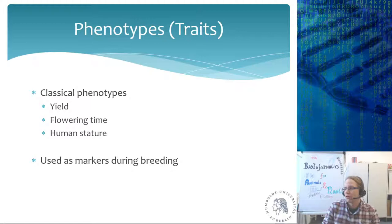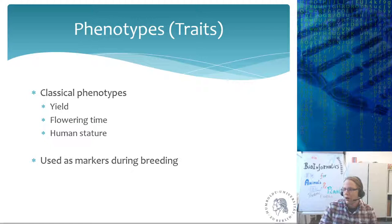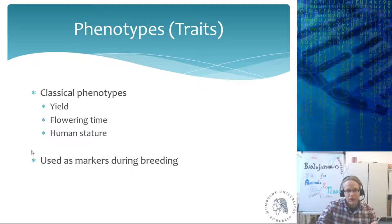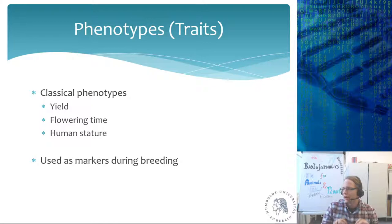These classical phenotypes have been used for many years as markers in plant and animal breeding. For example, a potato with a shorter flowering time lets you harvest it sooner. Similarly, a cow that gives a lot of milk — high milk yield — would be preferentially bred over a low-yield cow. Many classical phenotypes are markers: they are observable but not the thing you are directly interested in.